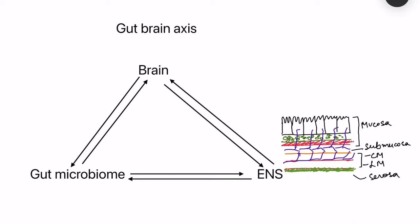Gut-brain axis is a term used for bi-directional gut-brain interactions. The gut has its own network of neurons known as the enteric nervous system, which is so extensive that it is sometimes called the second brain. This connection between the brain and enteric nervous system is not limited only to neuron interactions; there are many players involved, one of which is the gut microbiome.